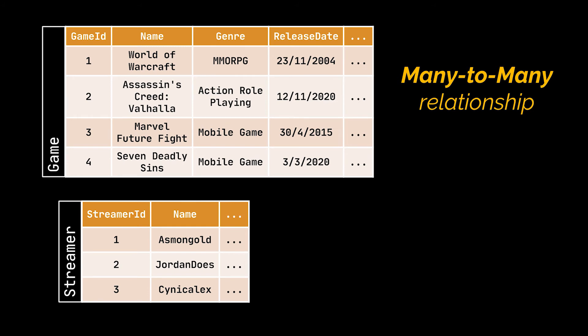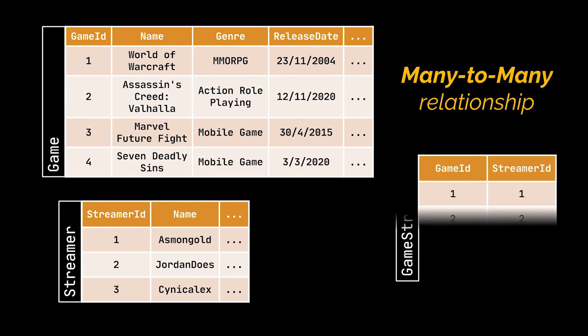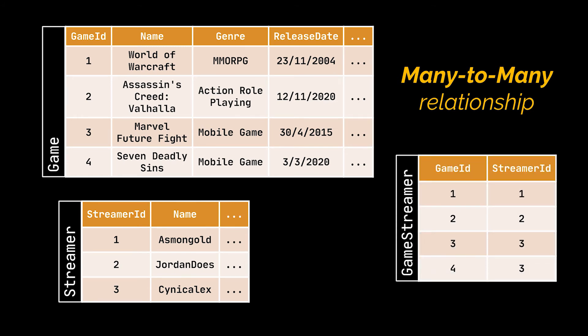This new table will be responsible for linking the other two tables together. Because of that, it is referred to as a junction or linking table. Its only reason for existence is to join these two tables and define the many-to-many relationship between them.